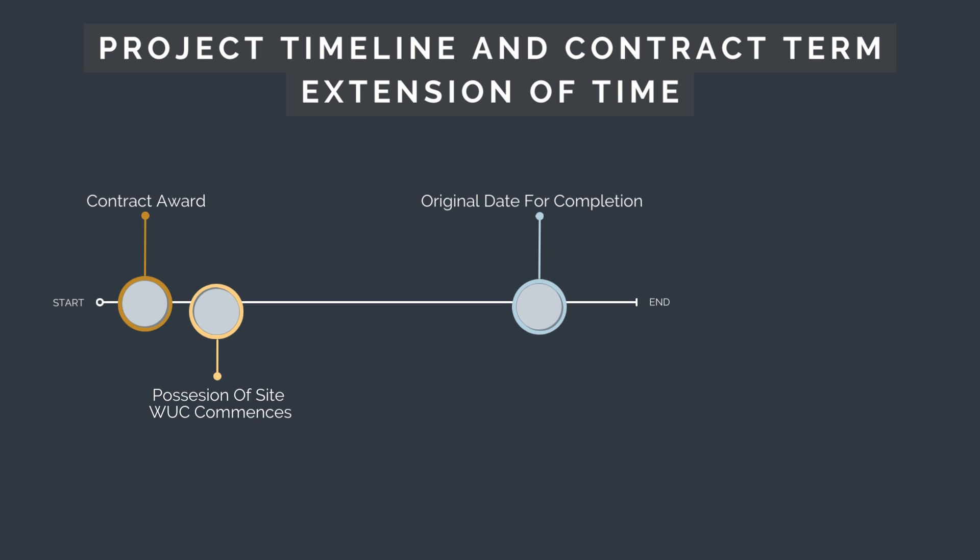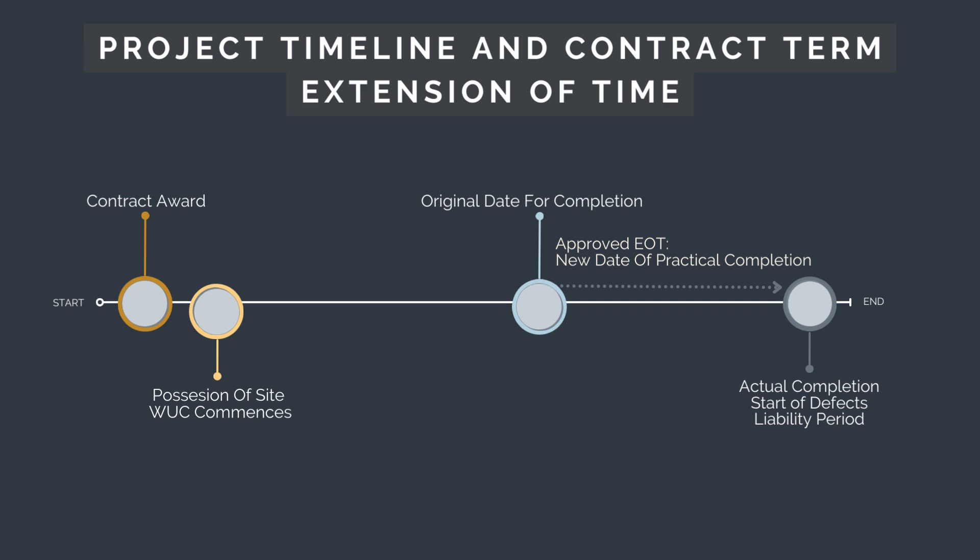However, the principal is delayed in providing the contractor an issue-for-construction design. Based on this, the contractor submits an extension of time, also known as an EOT claim. As the principal was responsible for providing design, this is classified as a qualifying cause of delay and the contractor's EOT claim is approved.